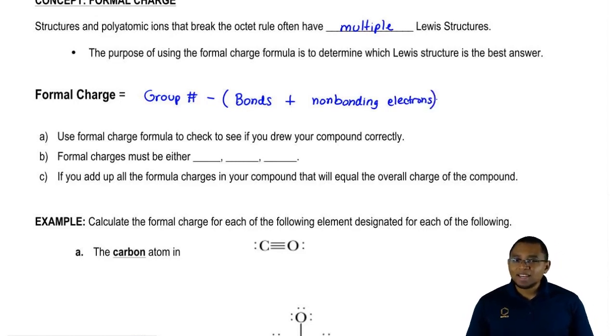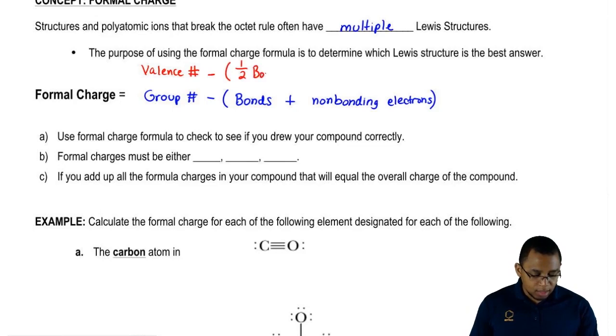This is the simplest way to look at it. In lecture, you may see instead formal charge equals valence number, and remember group number equals valence number, minus half of your bonding electrons plus your non-bonding electrons.